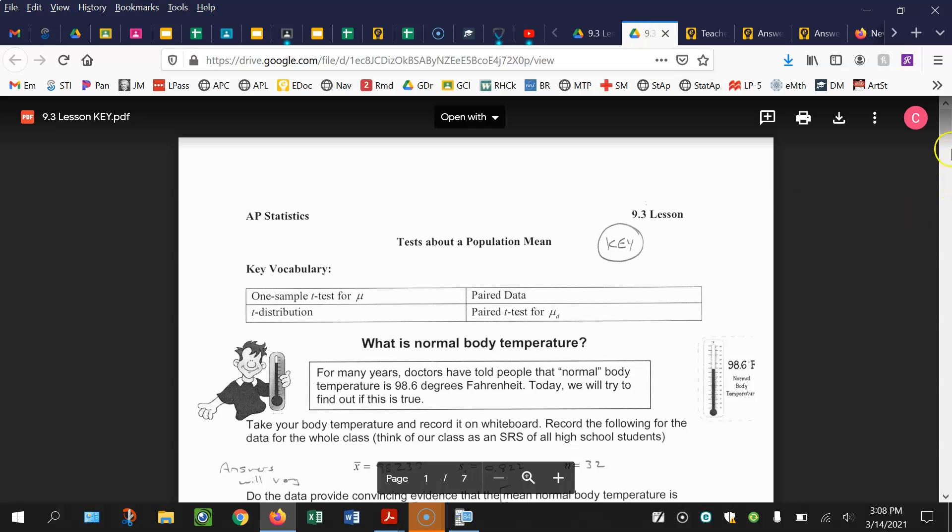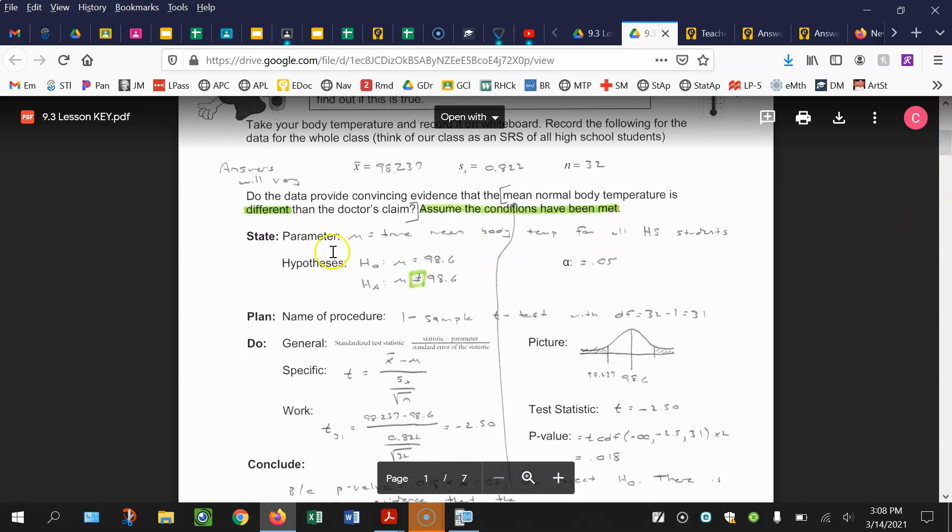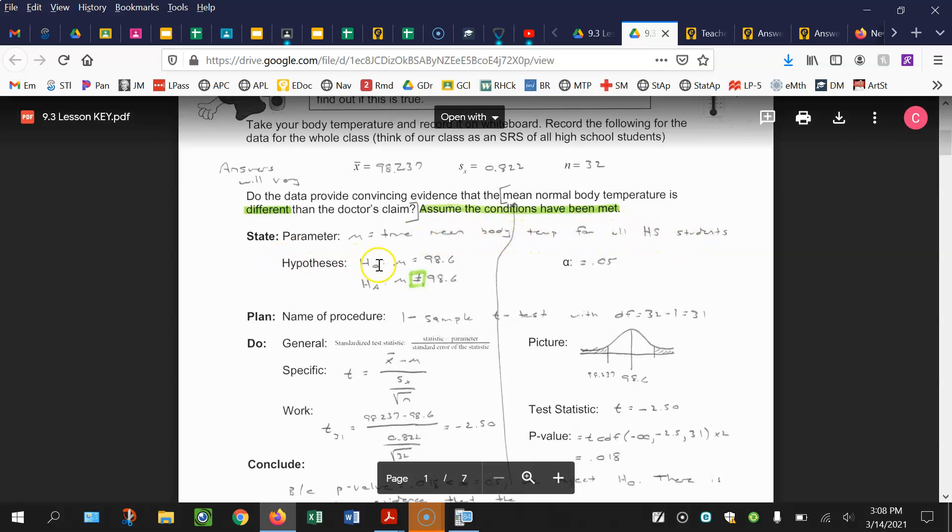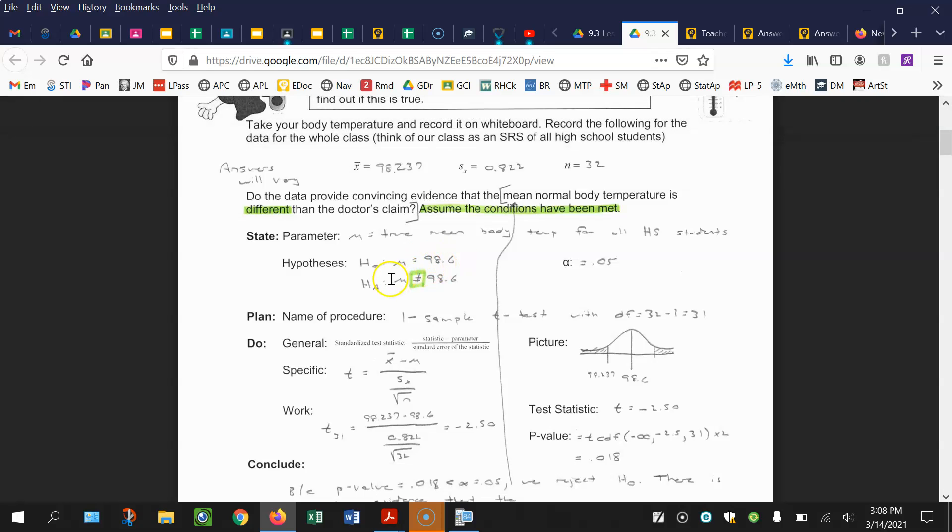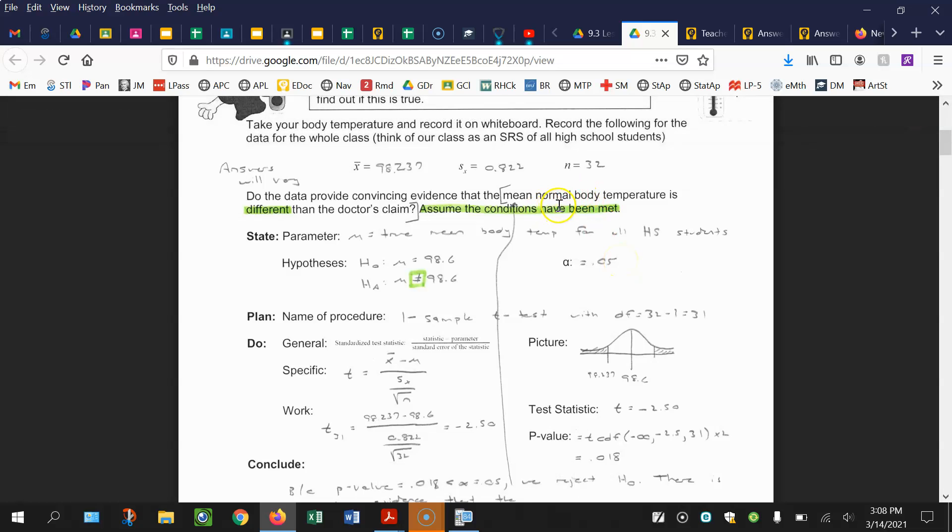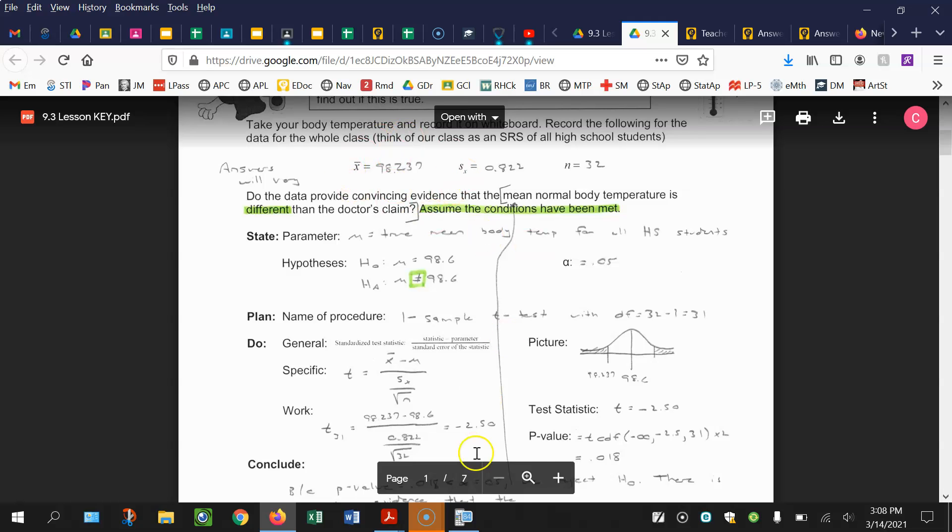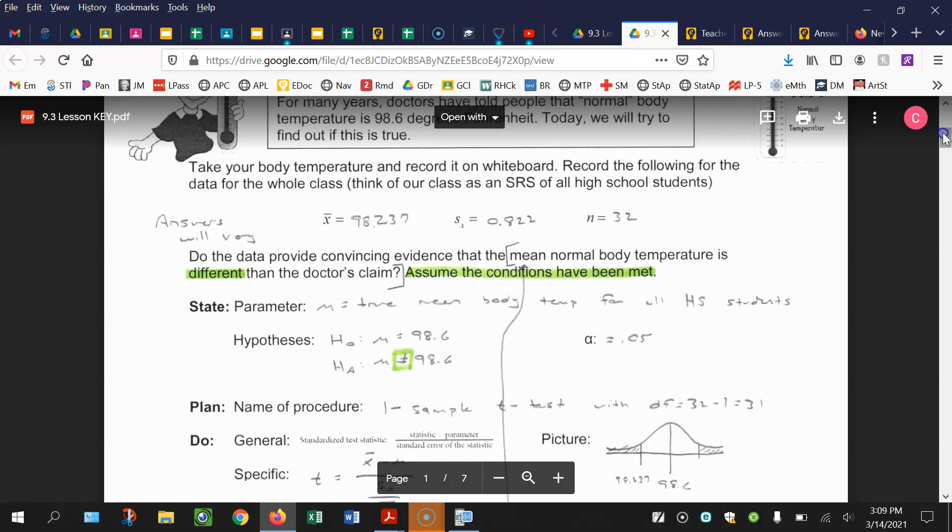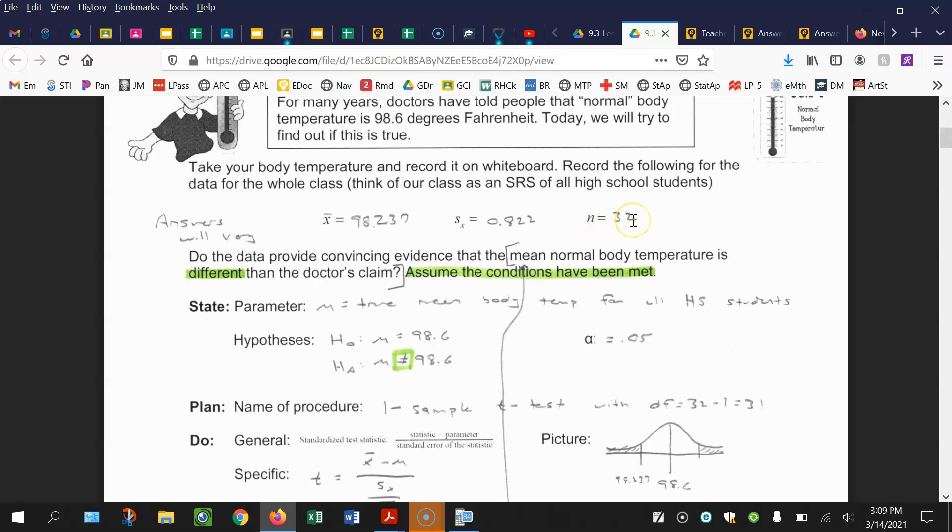What you should have came up with here is mu is the true mean body temperature for all high school students. The null is mu equals 98.6. The alternative, mu is not equal to 98.6 because they said, is there evidence that this is different than the doctor's claim? The significance level we always generically use is 5%. I'm going to give you some class data: the class average 98.237, the sample standard deviation 0.822, and the sample size 32.